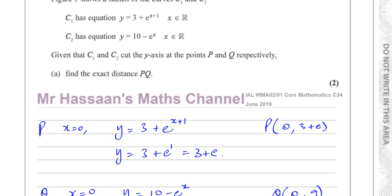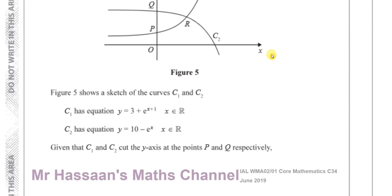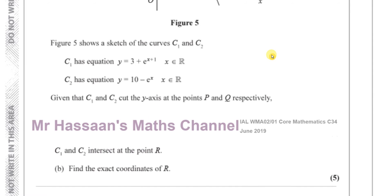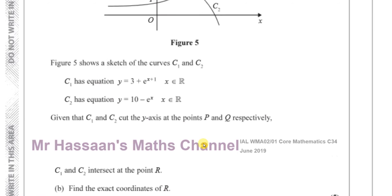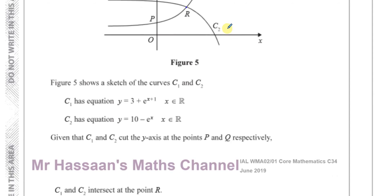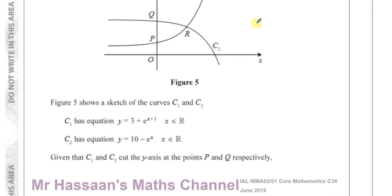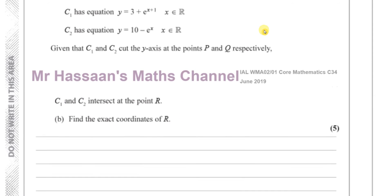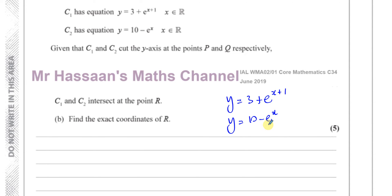Part B: given that C1 and C2 intersect at the point R, we have to find the exact coordinates of R. So we need to find where y equals 3 plus e to the power of x plus 1 and y equals 10 minus e to the power of x intersect, solving these two equations simultaneously.